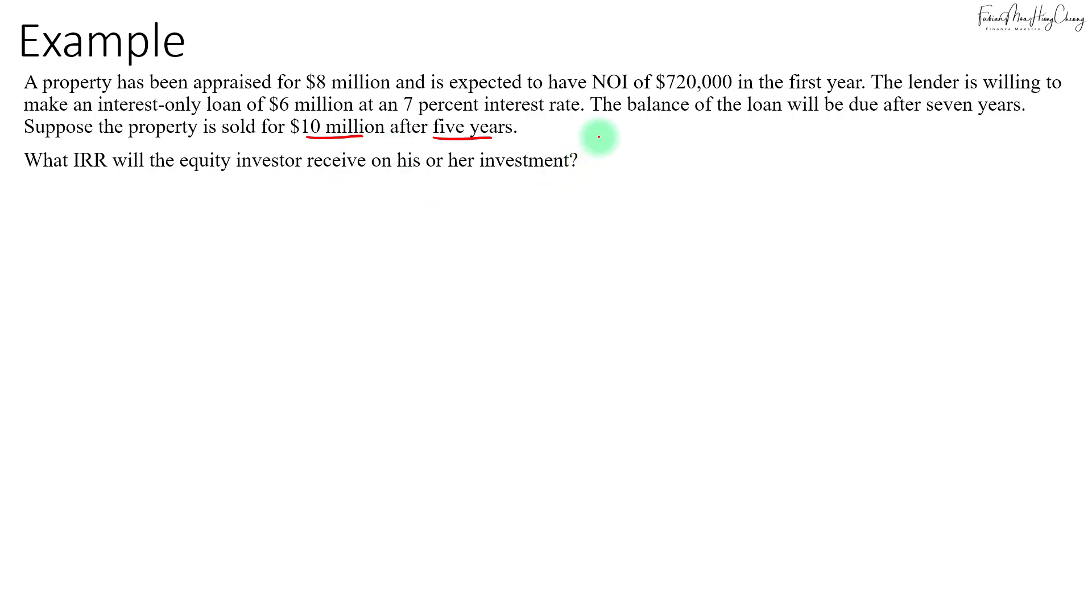We'll make use of the time value of money function in your calculator. If I draw the timeline at time zero, assuming this is a leveraged IRR calculation, at the start you will only have to come up with $2 million because the property is $8 million but you took out a loan of $6 million, so the equity investor only has to come up with $2 million funding.